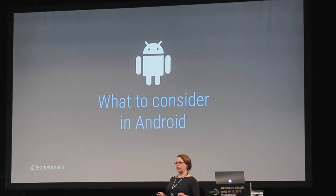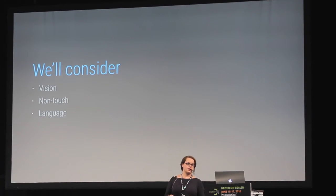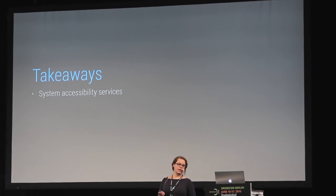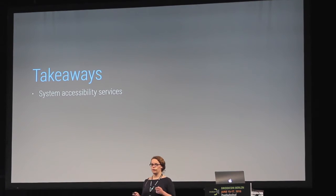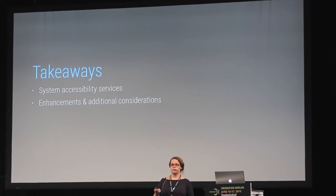What do we need to consider in Android? It's essentially trying to make products that can be used by as many people as possible without necessarily having to create a completely separate experience. Dependent on the use case, some users will require a vastly different experience, but in the majority of cases we should be able to make a few small tweaks. In this talk we'll consider vision, non-touch users, language, cognition, and environment. I'll give an overview of the system accessibility services, what we can do to enhance them, any additional considerations, and I'll also leave you with a design checklist.